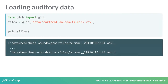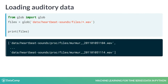Audio data is often stored in WAV files. We can list all of these files using the glob function, which lists files that match a given pattern. Each of these files contains the auditory data for one heartbeat session, as well as the sampling rate for that data.